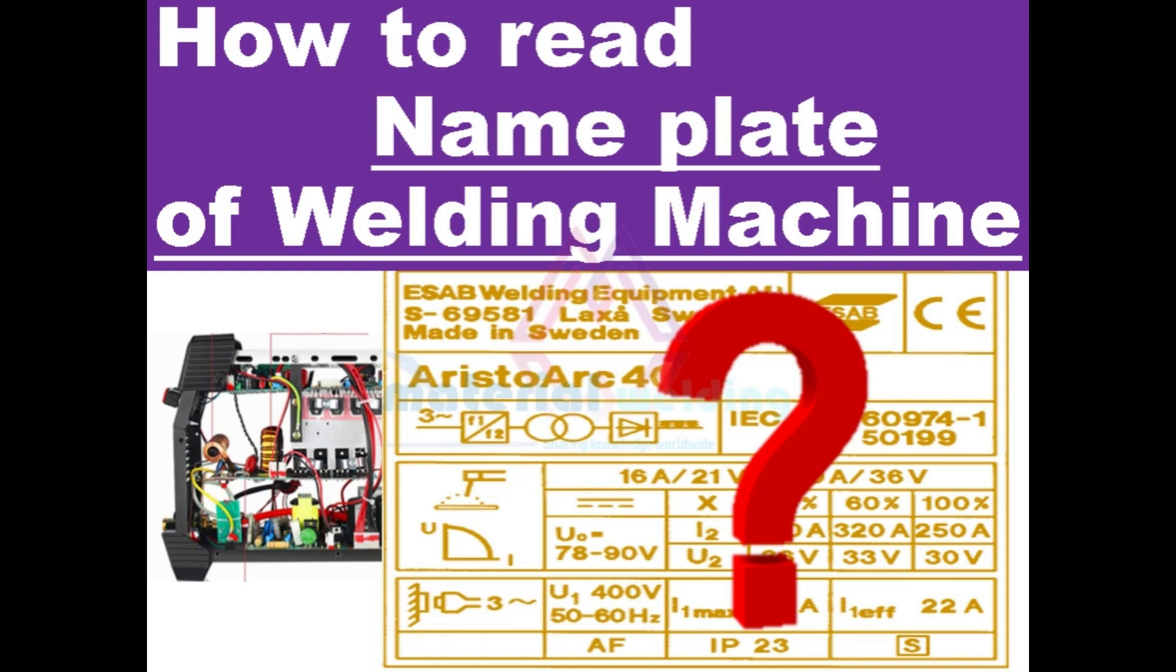By knowing how to read and interpret a rating plate, a person can easily identify the type of power source, for which process it can be used, what is the minimum and maximum operating parameters, type of input supply, voltage, safety, insulation class, and most importantly, the duty cycles for which that specific welding machine can be used.